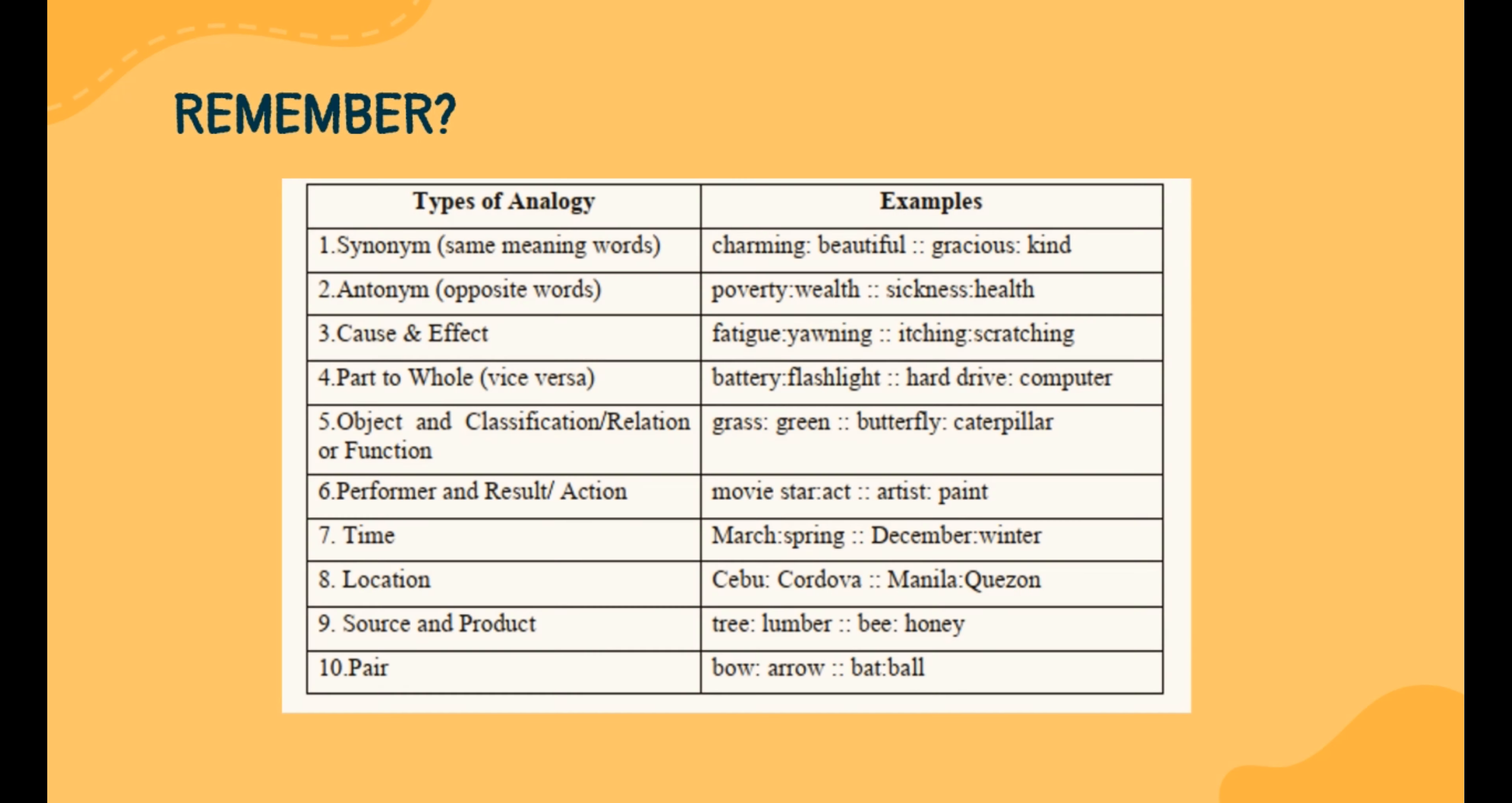There are many types of analogies: synonym, antonym, cause and effect, part to whole, object and classification or relationship or function, performer and result, direction, time, location, source and product, and pair.